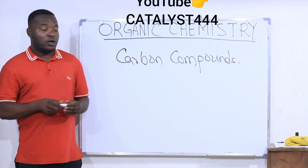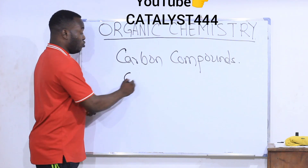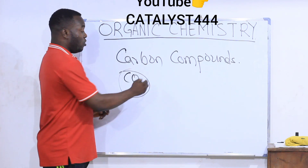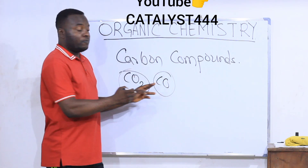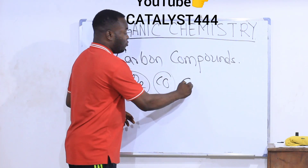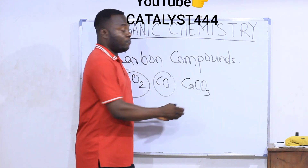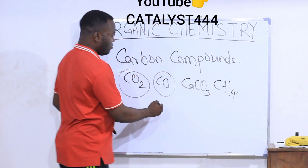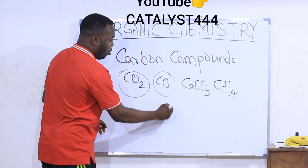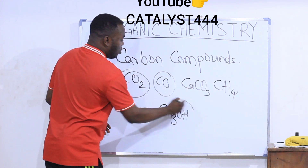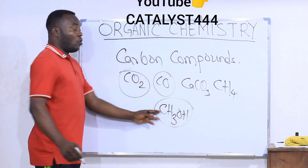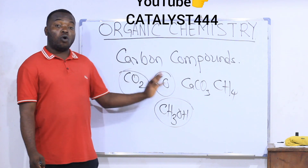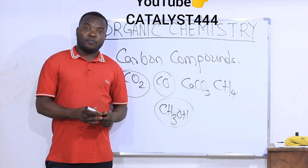There are thousands of them. So let's talk about CO2 — this is a carbon compound. CO is a carbon compound. Calcium carbonate is a carbon compound. Methane is a carbon compound. Methanol is a carbon compound. All these compounds contain carbon, therefore they are all called carbon compounds.